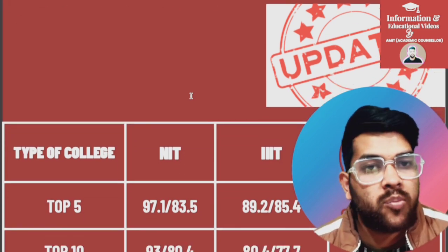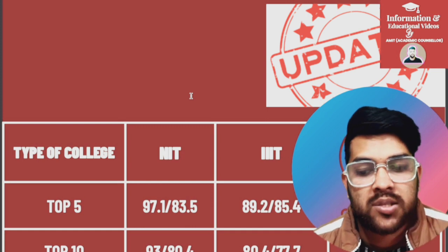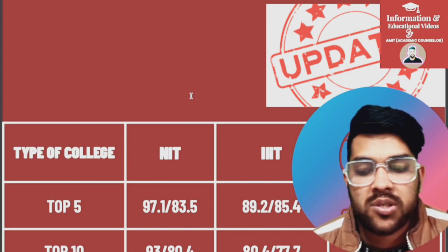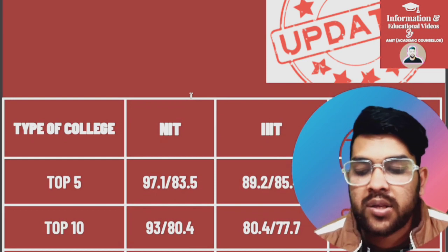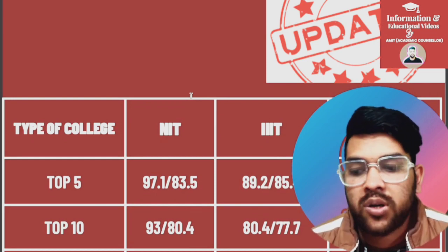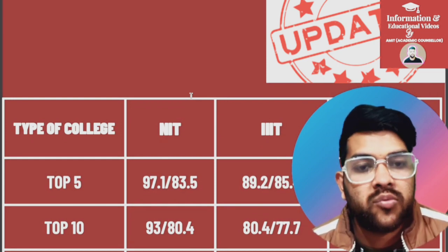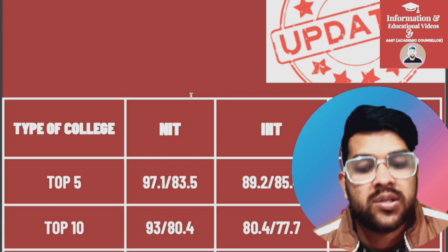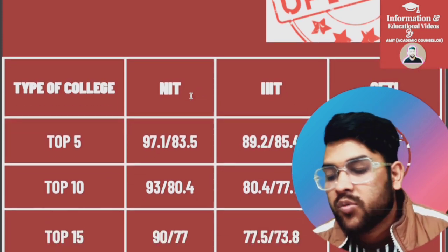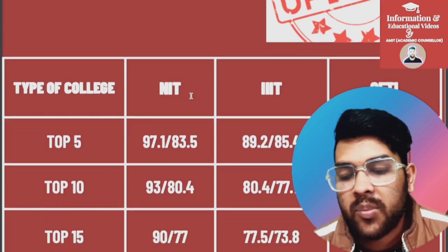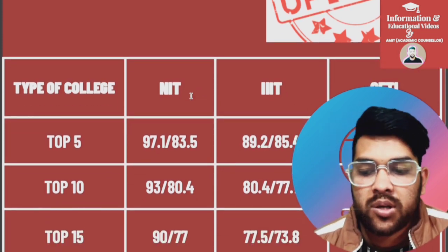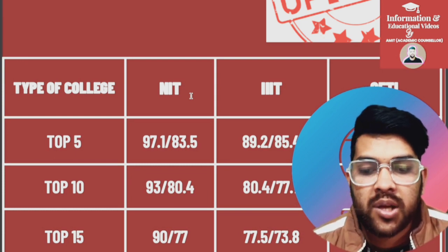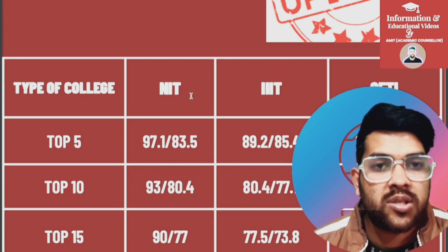For IIITs, 89.2 and 85.4 percentile is required; for GFTIs, 84.4 and 65.2 percentile. For top 10 NITs, it is 93 and 80.4; for IIITs, 80.4 and 77.7; for GFTIs, 78 and 71. For top 15 NITs, it is 90 and 77; for IIITs, 77.5 and 73.8; and for GFTIs, 74 and 69.